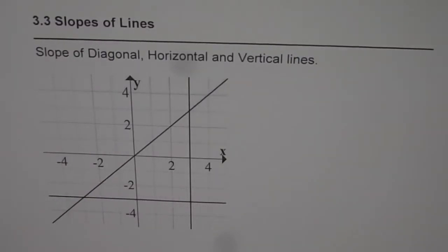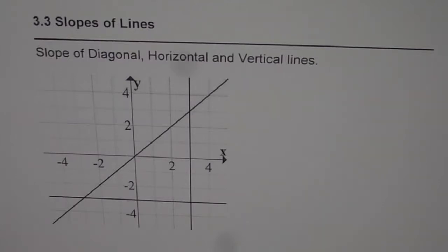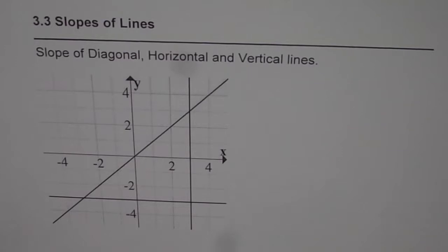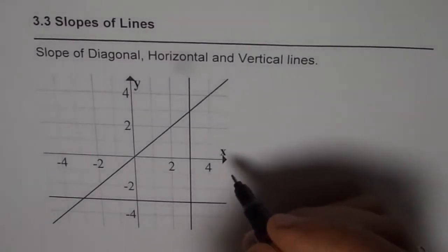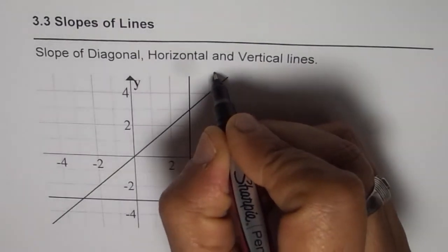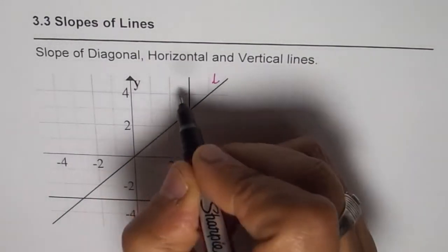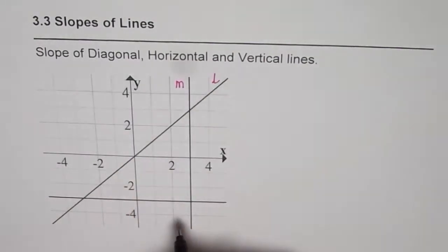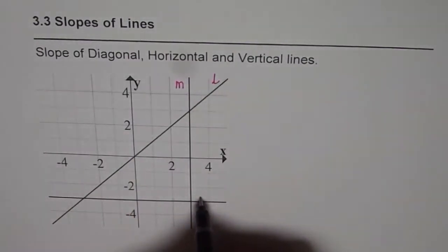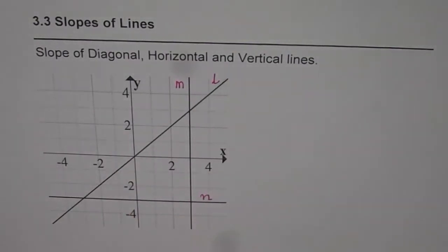I am Anil Kumar and in this video we will learn how to find slope of a diagonal, horizontal and vertical line. On a coordinate system we are given three different lines. Let me name these lines — this line as L, the vertical line as M, and the horizontal line as N. So we have these three different lines.